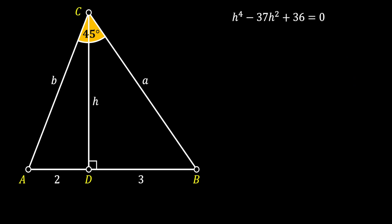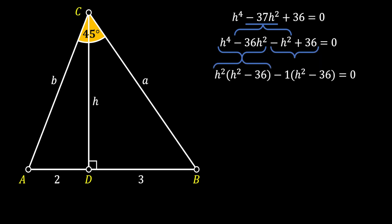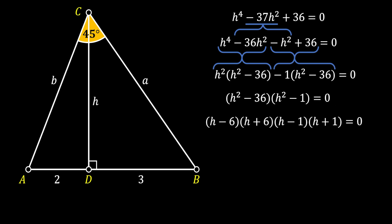We can solve this equation in multiple ways, but this time I will use the method of splitting the middle term. We split the middle term and group the first two terms and the last two terms using common factors. Then we isolate the common factor (8H² − 36) to get the following equation. Both factors represent the difference of squares, so expanding them gives us four different solutions: H equals 6, −6, 1, or −1.